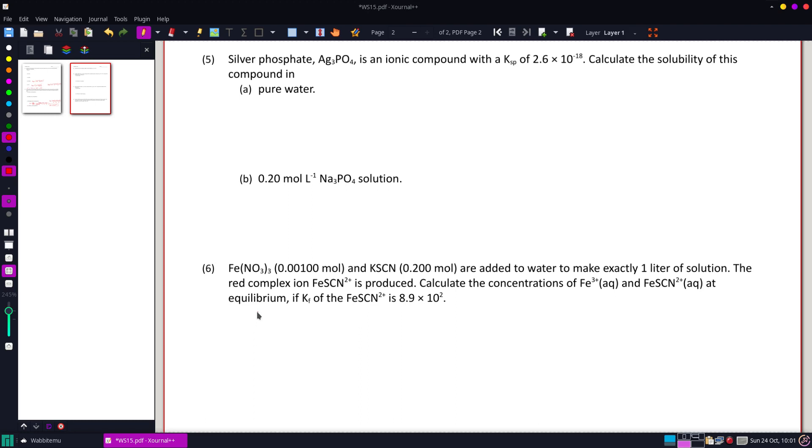We want to calculate the concentration of iron and the cyanate, iron cyanate, at equilibrium if our KF is 8.9 times 10 to the second, so it's not as huge as most of our KFs, but we can still do the calculation the exact same way we would even if it was a very large one.